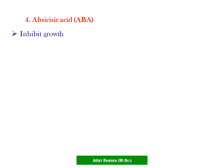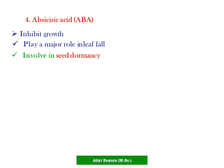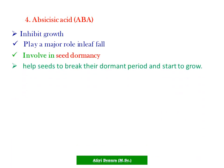Abscisic acid inhibits the growth of plants. It plays a major role in leaf abscission, involves in seed dormancy, and helps seeds to break the dormant period and start to grow. It is also involved in geotropism.